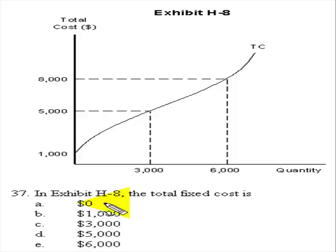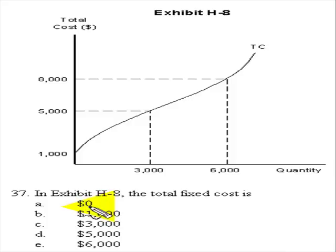In Exhibit HA, the total fixed cost is which of the following? Well, it for sure can't be zero, because remember, when you have fixed cost, you're going to have some amount of fixed cost regardless of the level of output.